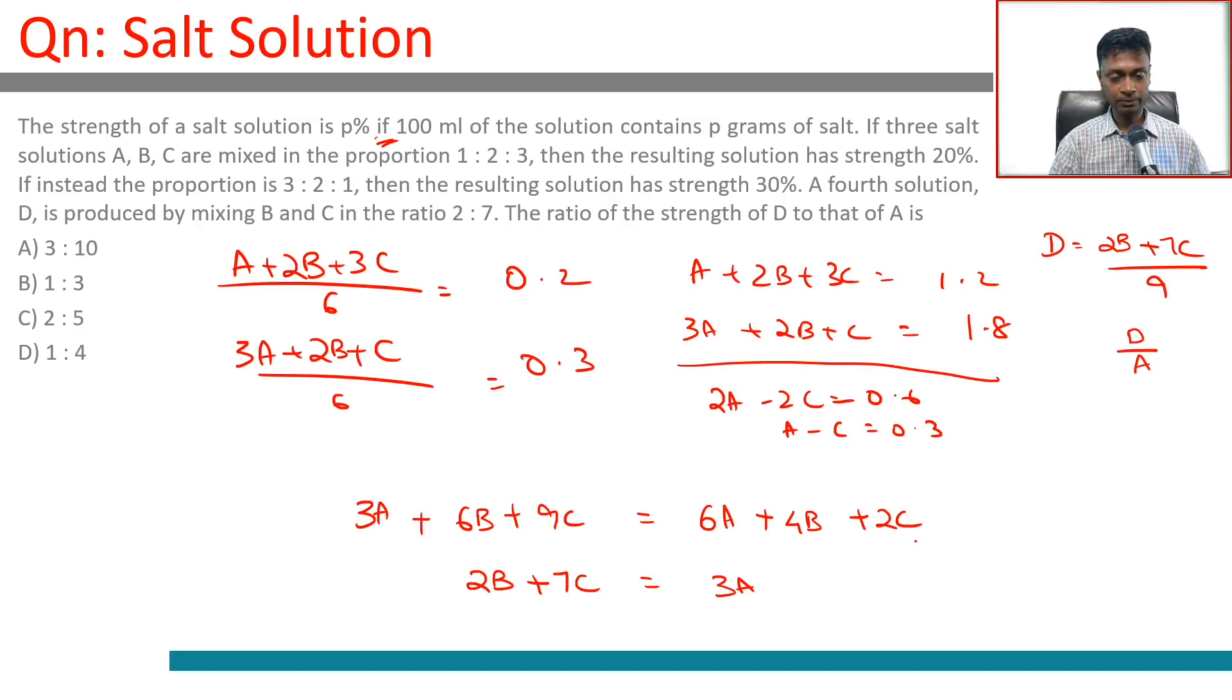2B plus 7C equals 3A - it's just giving us something! Think about this: 2B plus 7C, we've seen that somewhere. 2B plus 7C sits here - 2B plus 7C by 9 is 3A by 9, or D equals 3A by 9, or D is A by 3.